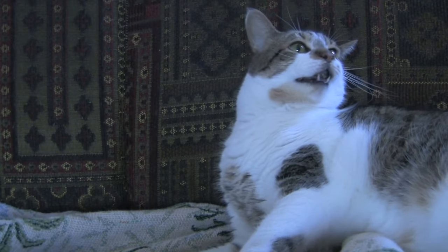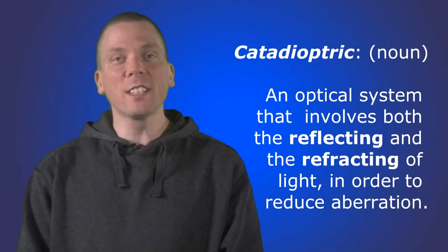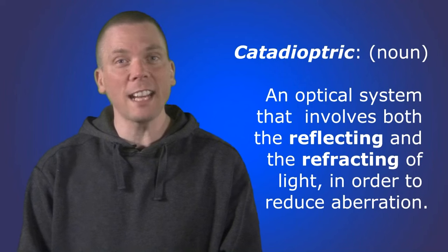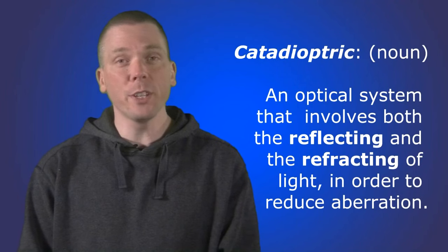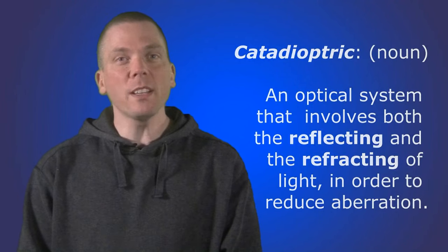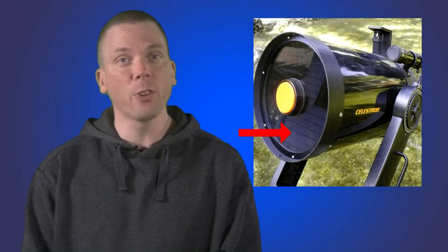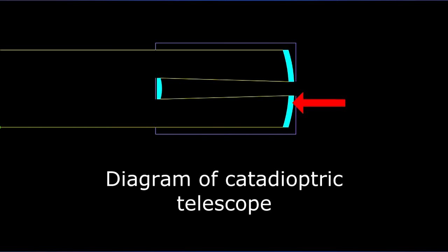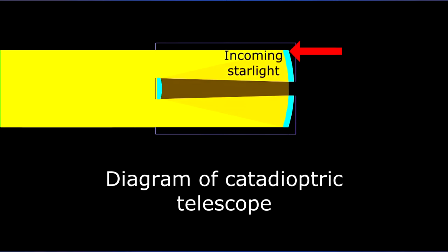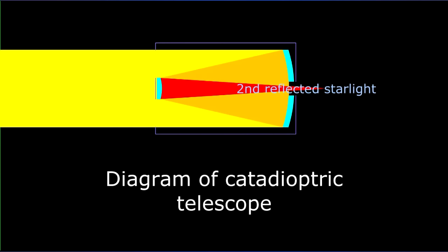The third type of telescope is a compound telescope or catadioptric. Cat-a-what? I know, that's a big word. It means an optical system that involves both the reflecting and refracting of light in order to reduce aberration. So, this Schmidt-Cassegrain telescope, for example, utilizes a corrector lens on the front of the telescope, a strongly curved primary mirror at the back, and then another outwardly curved mirror in the middle of the corrector lens before light finally goes through the center of the back of the telescope to the eyepiece.